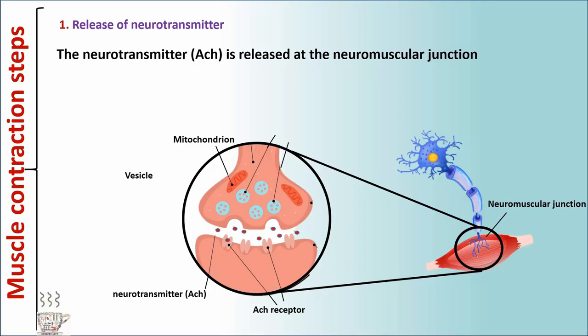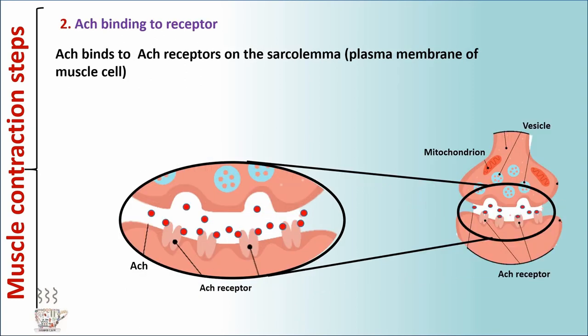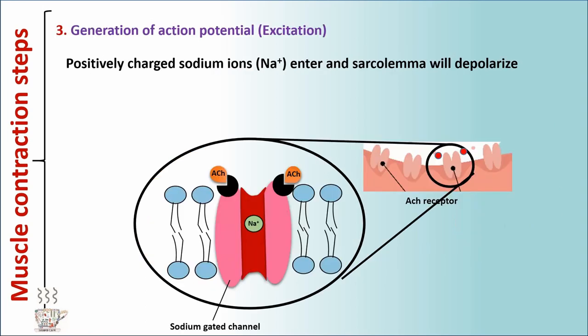Muscle contraction steps. Step 1: Release of neurotransmitter. The neurotransmitter acetylcholine is released at the neuromuscular junction. Step 2: Acetylcholine binding to receptor. Acetylcholine binds to acetylcholine receptors under the sarcolemma — the sarcolemma is the plasma membrane of the muscle cell. Step 3: Generation of action potential or excitation. Positively charged sodium ions enter and the sarcolemma will depolarize.